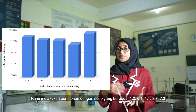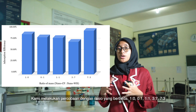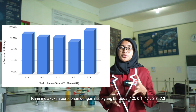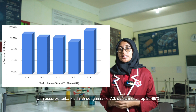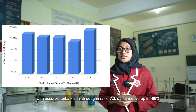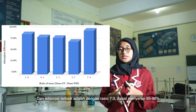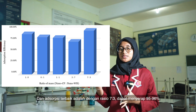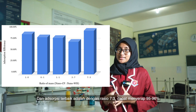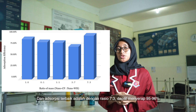Next is the effectiveness of iron absorption. We used different ratios in this experiment: 1 to 0, 0 to 1, 1 to 1, 3 to 7, and 7 to 3. The best absorption is achieved using a ratio of 7 to 3, because it can absorb 95% to 96% of the total iron.